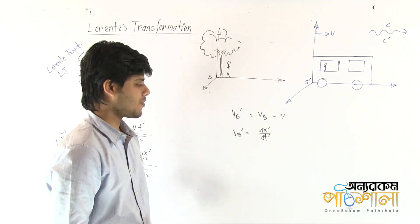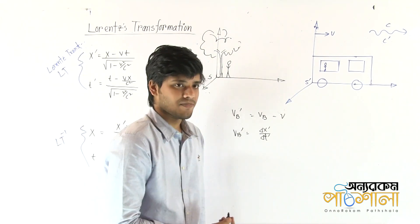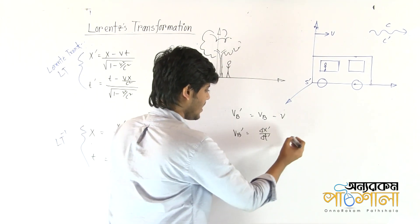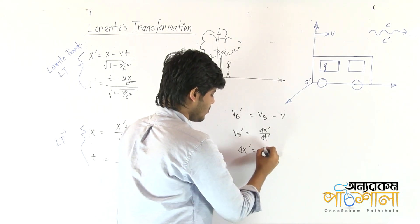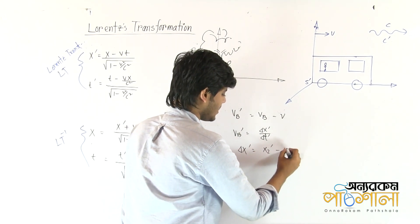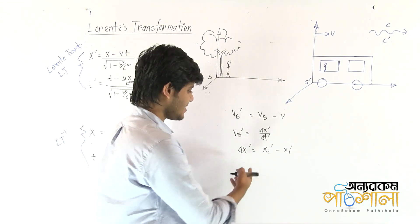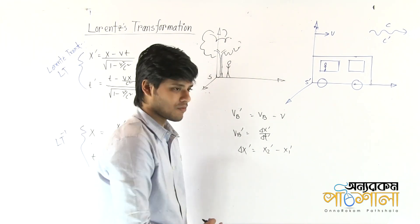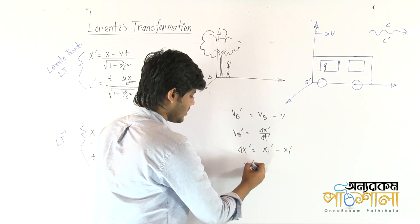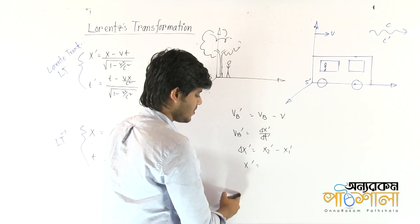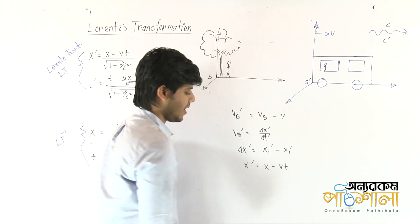VB' is delta X' by delta T'. What have we done here? If we have to find the values of X1' and X2', let's see here — we have X' by X' by X' by x minus x'.